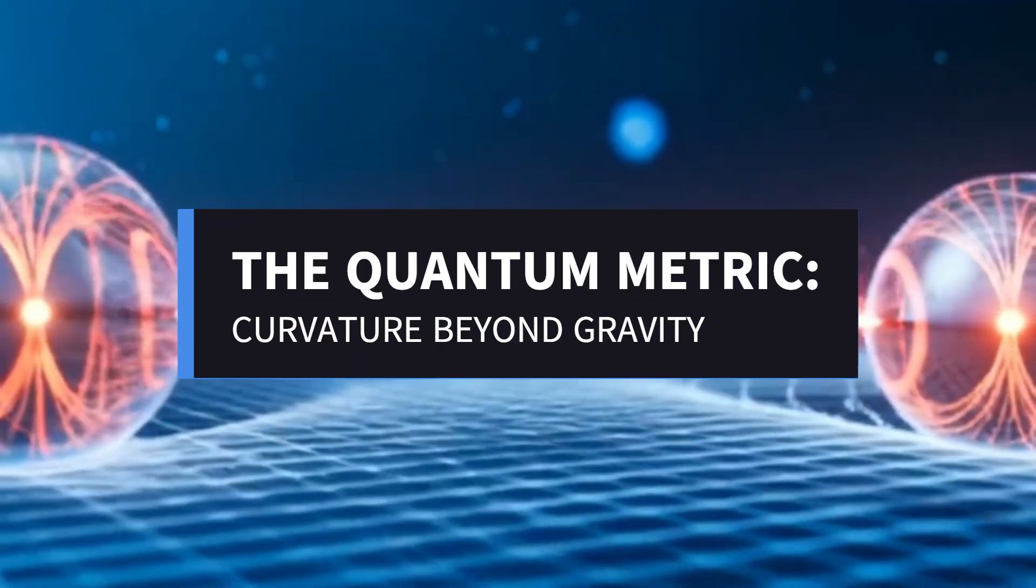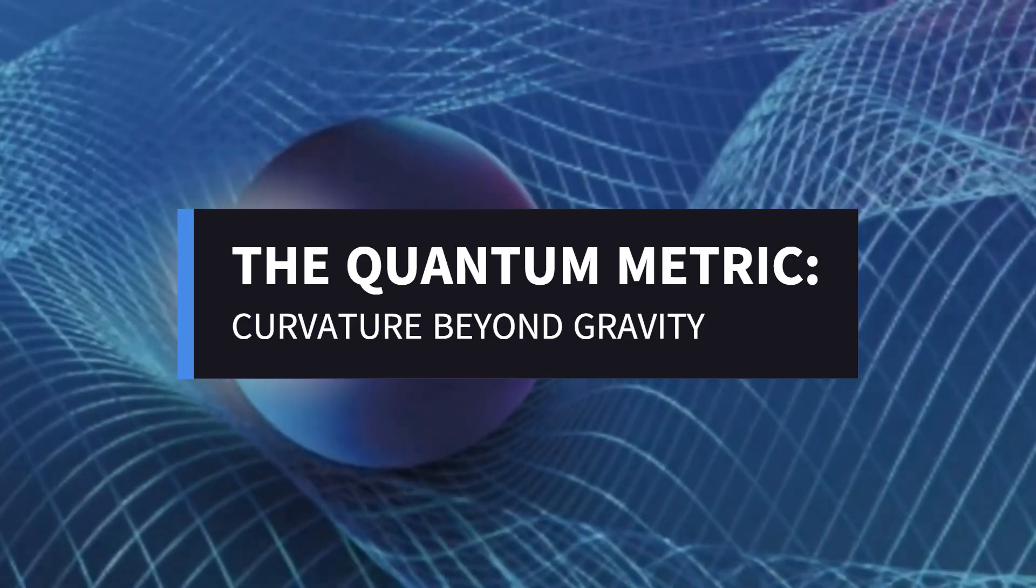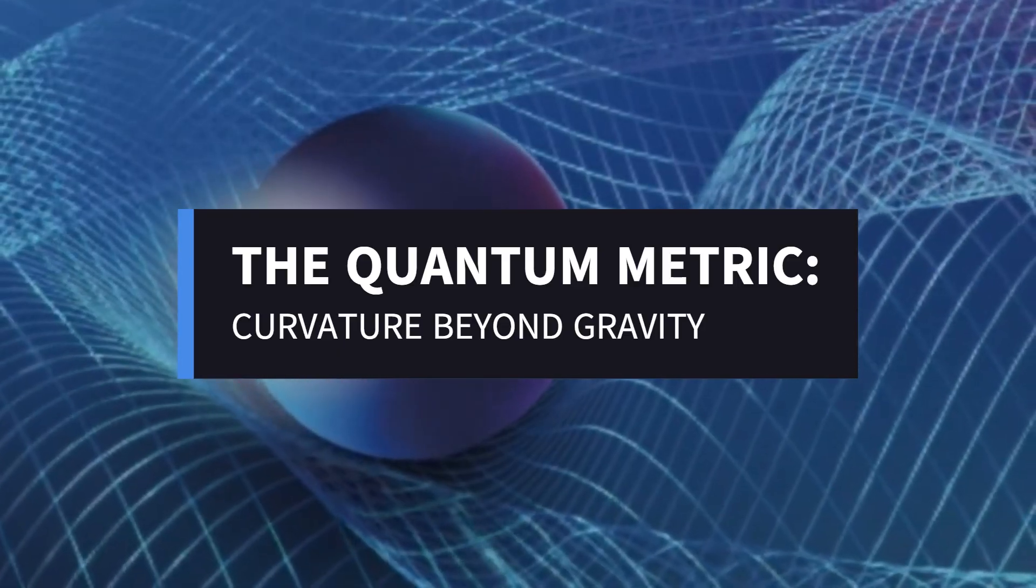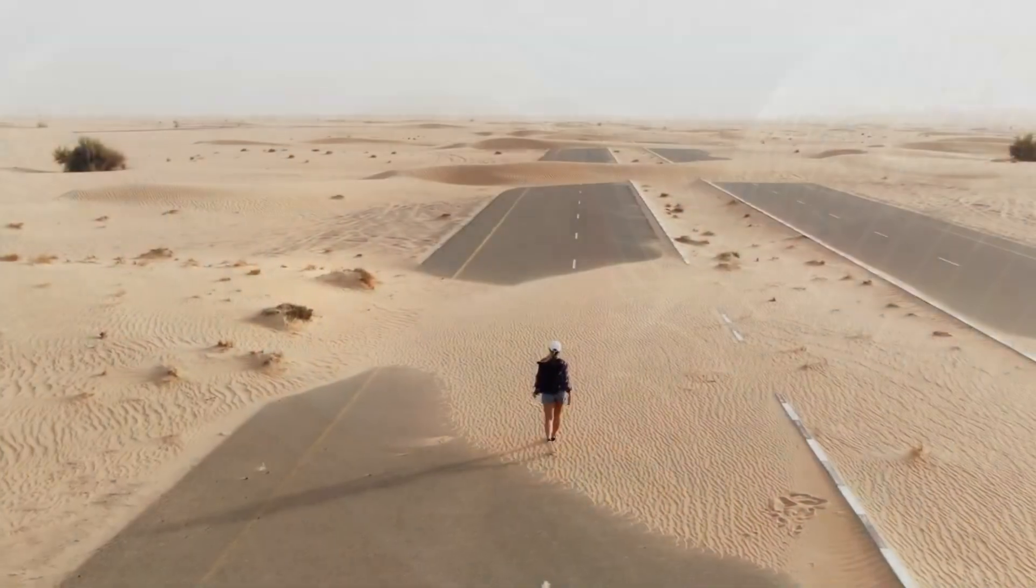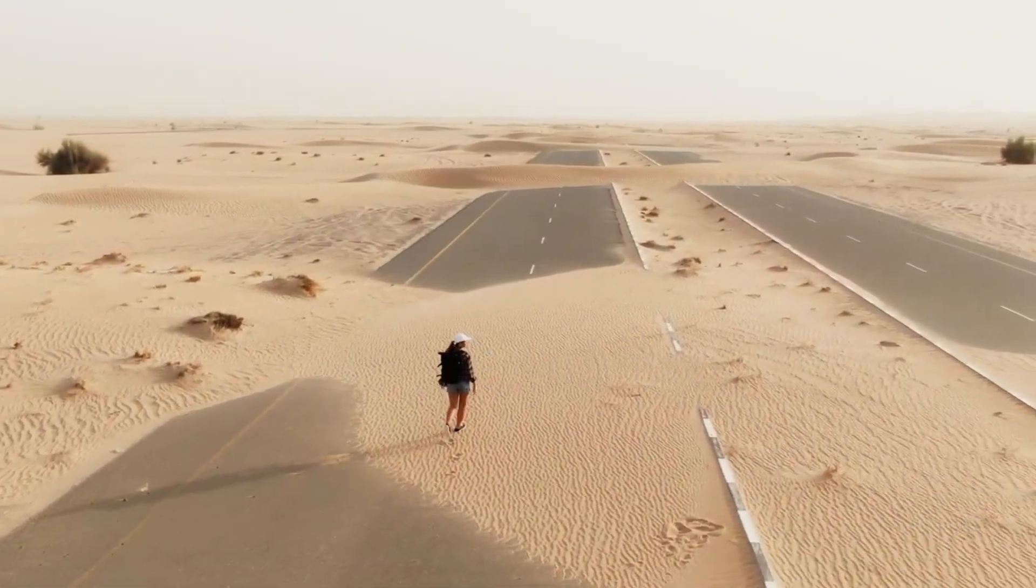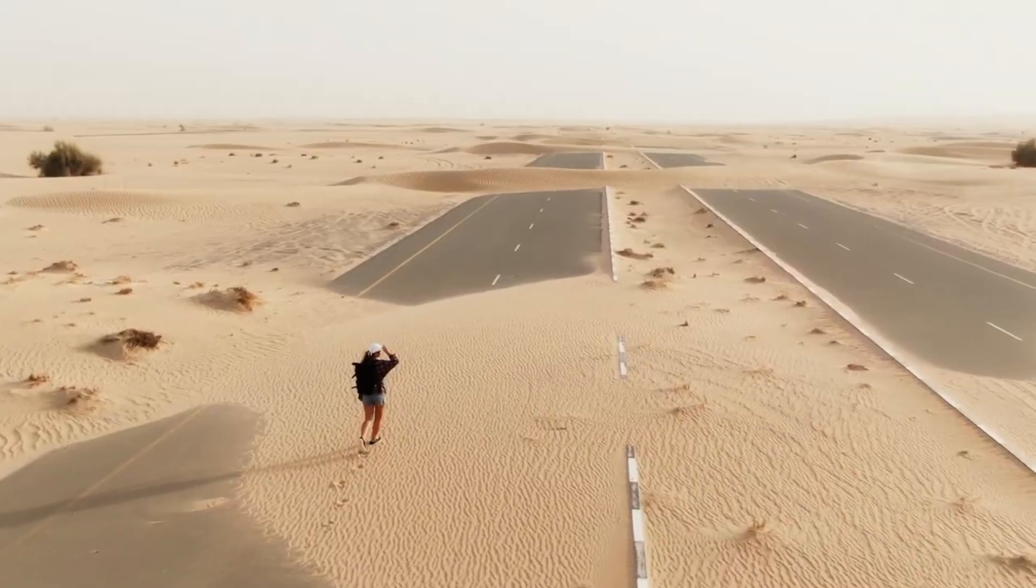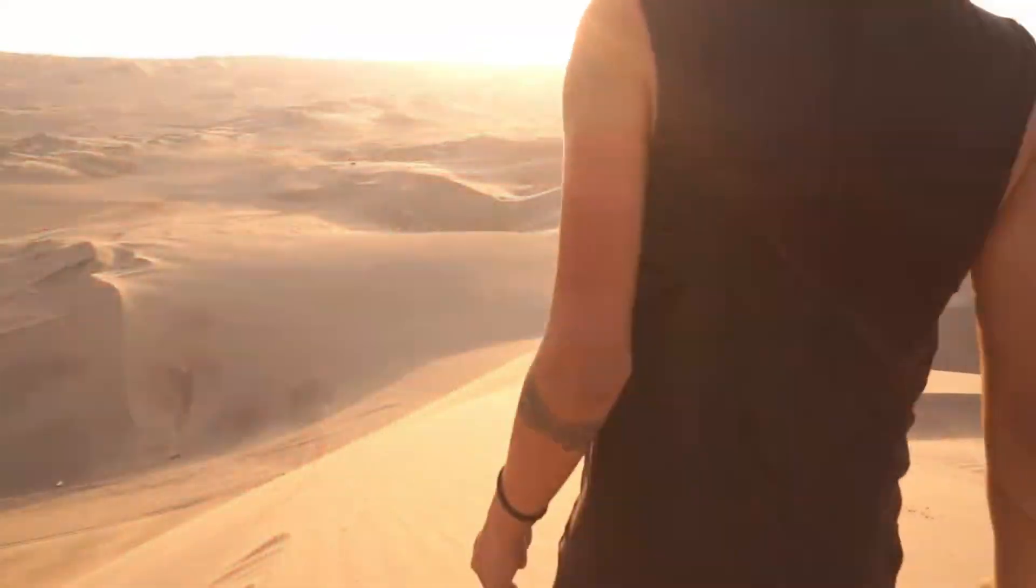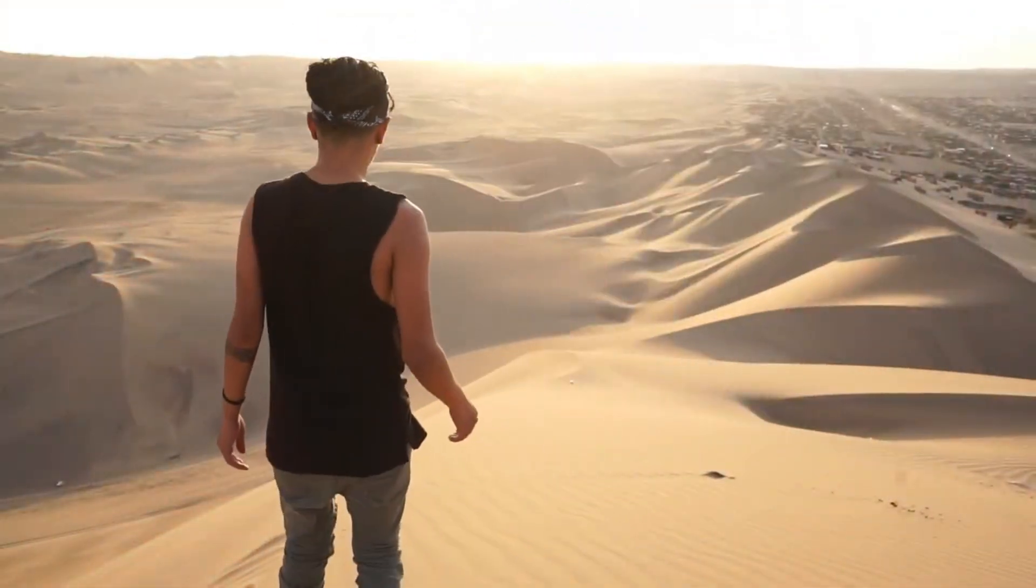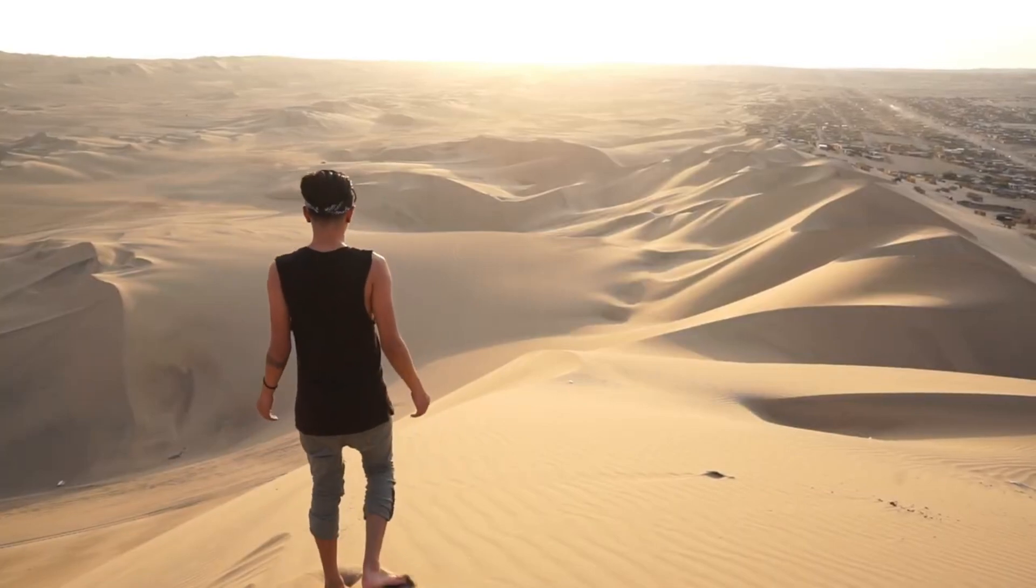To grasp the idea of quantum geometry, it helps to think in metaphor. Imagine walking across a perfectly flat desert. The shortest path between two points is a straight line. Now imagine traversing a landscape of hills and valleys. Even if you attempt to walk straight, the terrain forces your path to curve.